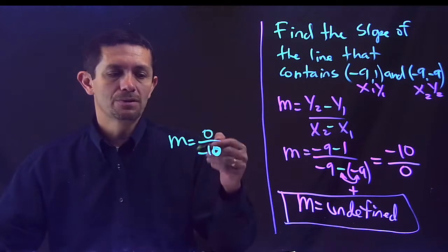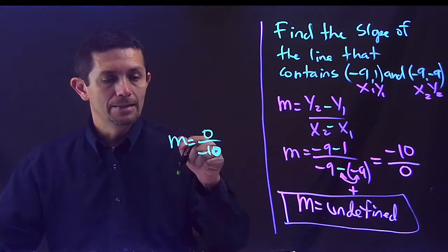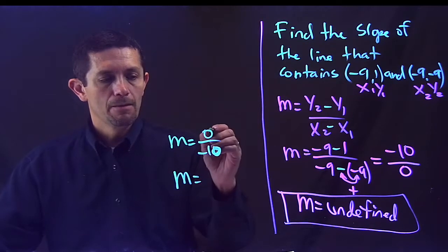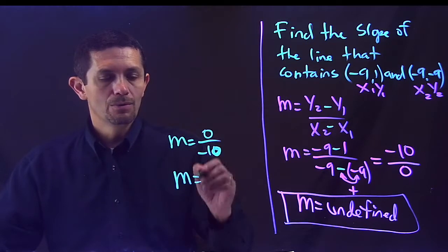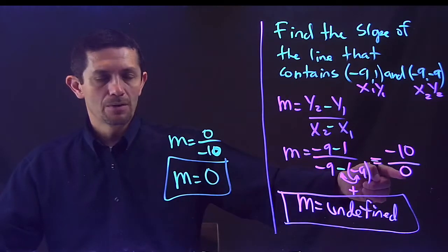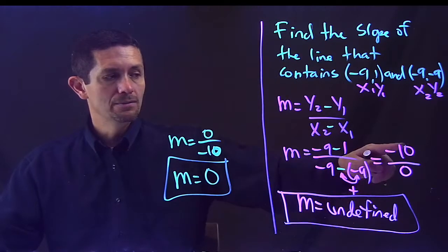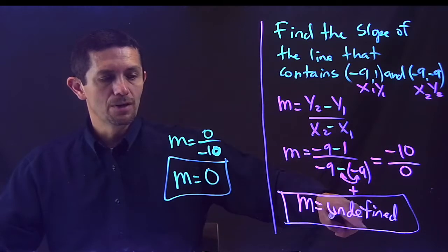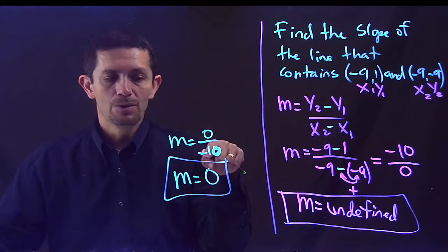What happened now? I have a 0 on the top divided by negative 10. In this case, 0 divided by any number will give you always 0. So that's the difference. If the 0 is on the bottom, it will give you undefined. Any number divided by 0 is undefined. If the 0 is on the top, 0 divided by any number, the answer is 0.